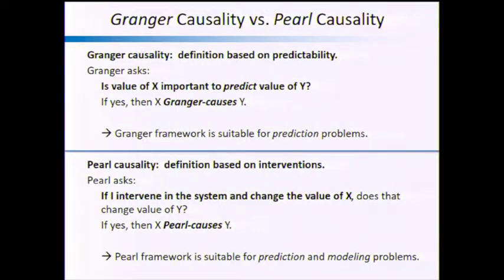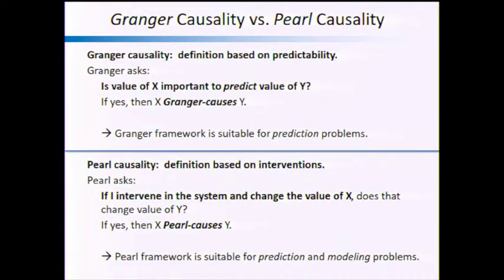In contrast, Pearl causality is defined on interventions. Pearl asks: if I intervene in my system and I change the value of x, and maybe let some time pass, does that change the value of y? That's a very different question. For example: I notice that whenever my clock says 10 pm, it's dark outside. If I take my data and say my clock must be causing it to be dark outside, I'll do an experiment — I'll change my clock. Do you think it's going to be bright outside? Of course not. That's the key difference between Granger causality and Pearl causality.